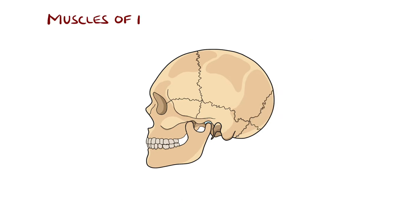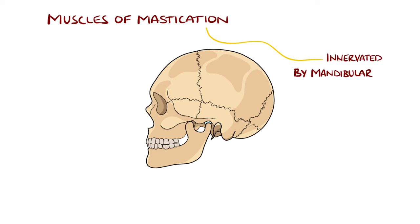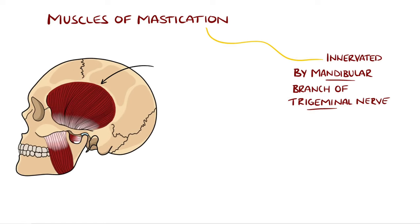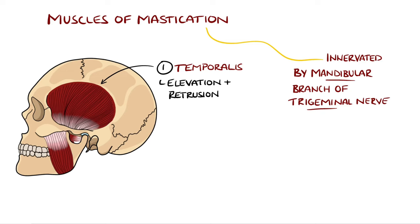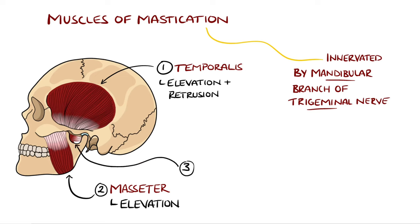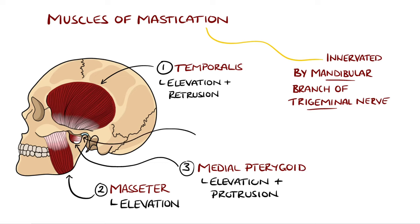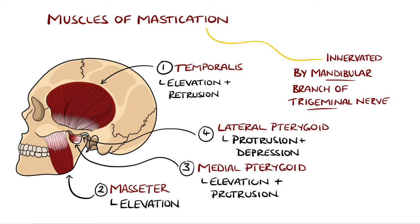There are four muscles of mastication, innervated by the mandibular branch of the trigeminal nerve. They include the temporalis, which is the most powerful muscle of the temporo-mandibular joint muscles and is involved in elevation and protrusion of the mandible. The masseter is responsible for elevating the jaw, and the medial pterygoid muscle is involved in elevation and protrusion of the mandible. The lateral pterygoid muscle functions to protrude the mandible and is the only muscle of mastication involved in depressing the mandible.